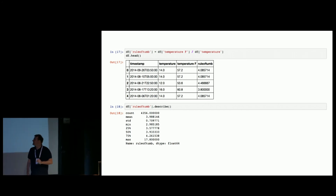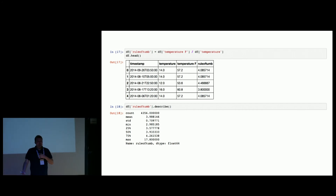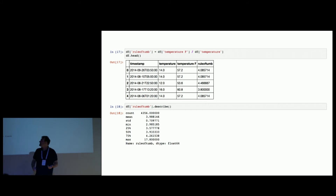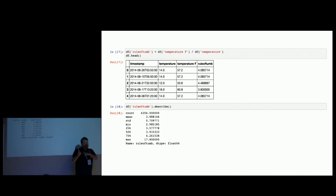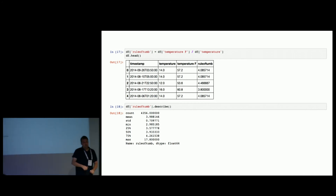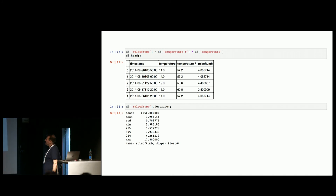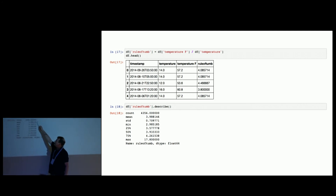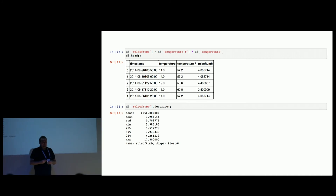Let's create another data series and see — for a rule of thumb, we want something easy to divide or multiply by. We can take these two series and since they're series, we can do calculations as if they were vectors — just divide them by each other. Each value is divided element-wise and we get a new series output saved to our rule of thumb. That looks quite good — we could settle for four.